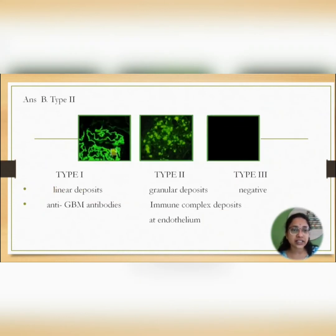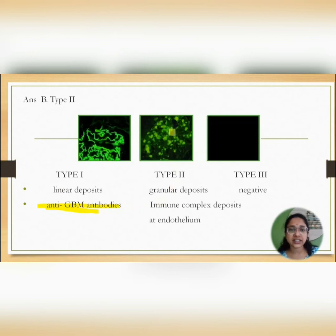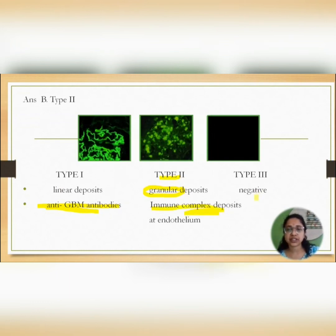For comparison: the linear deposits seen in Goodpasture syndrome are due to anti-GBM antibody deposition. The granular deposits seen here confirm Type 2 RPGN, which is immune complex mediated. In Type 3 RPGN, immunofluorescence will be negative — no deposits are seen.